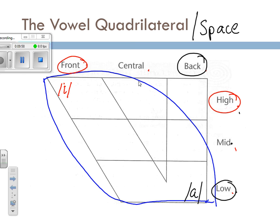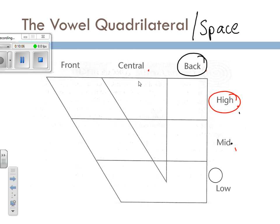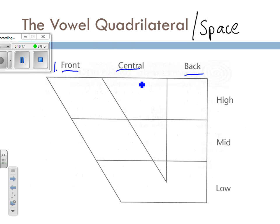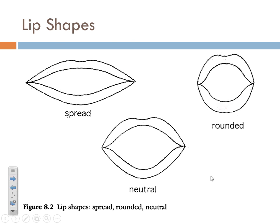To summarize: when describing vowels, you're always going to describe them in terms of front, central, or back; high, mid, or low; and then you add lip shape. That's the bare minimum when talking about a vowel. We'll get into some more of the extras as well. But first, here are the various lip shapes you can have when talking about vowels.